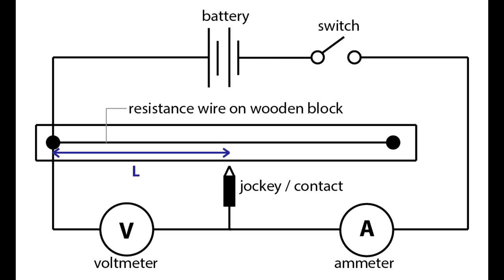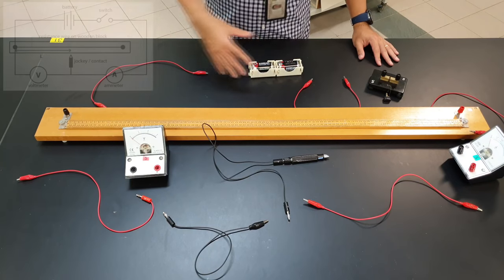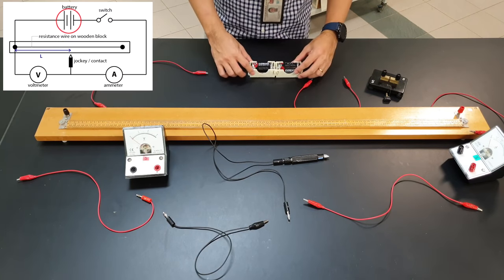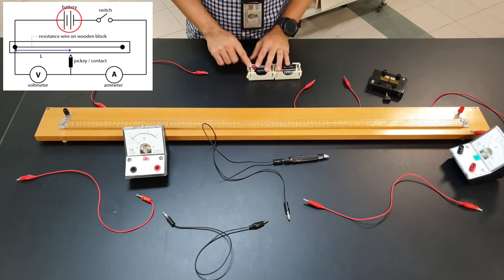In this video, we're going to show you how to set up a simple electrical circuit based on this diagram. First, lay out the components as shown in the diagram. Let's start with the battery. Conventional current